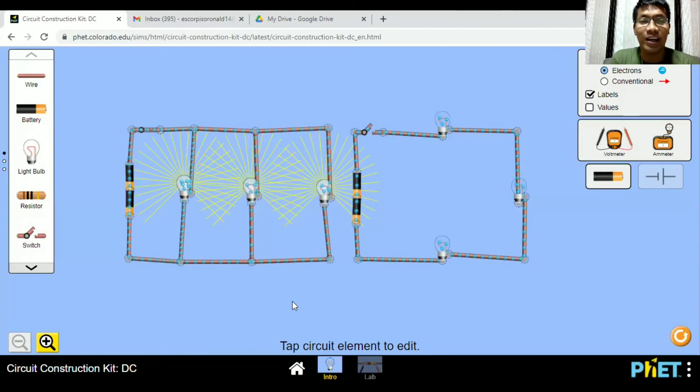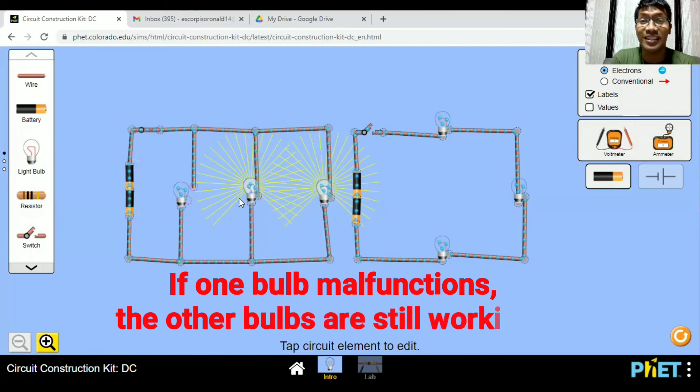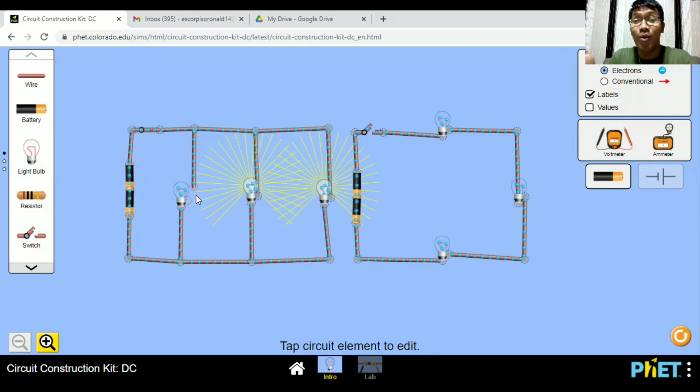This time, let us try to break one of the lines. Let's try to click here, then cut this bulb. If you have seen or observed, the other two bulbs are still working, despite the breakage in this line. Because remember, the charges have several paths to take, because a parallel circuit has two or more loops.